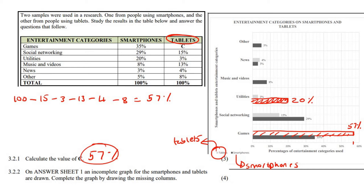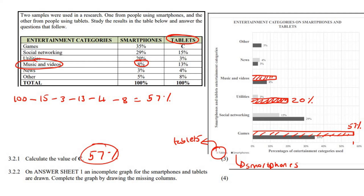For music and videos, they've already got the 8% bar for smartphones, so we need to draw the tablet bar at 13%. Between 0 and 10 is this line, and between 10 and 20 we can count: 12, 14, 16, 18, 20. So 13% sits between 12 and 14. When you have a ruler in an exam it'll be much easier. Draw the gray bar up to there and label it 13%.